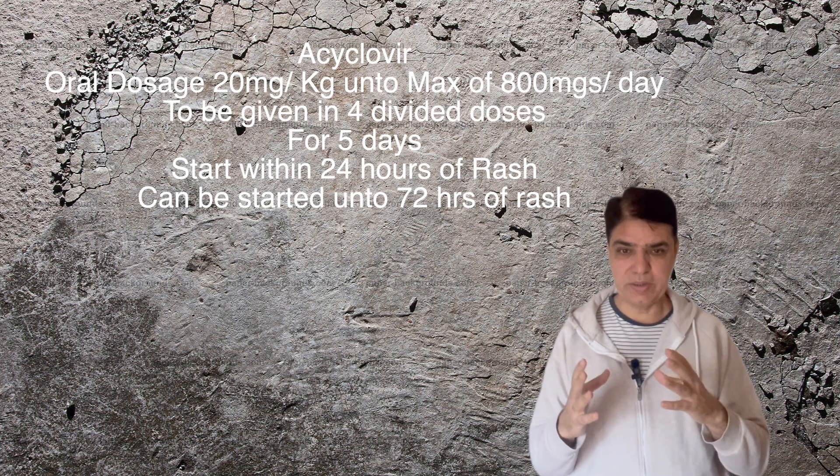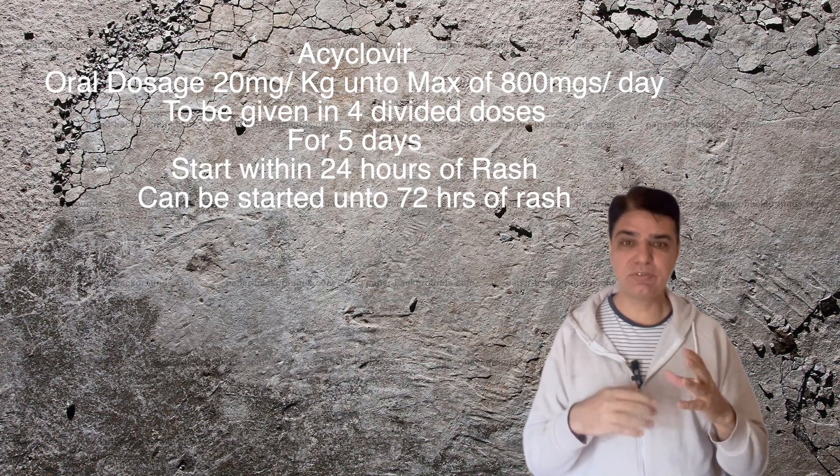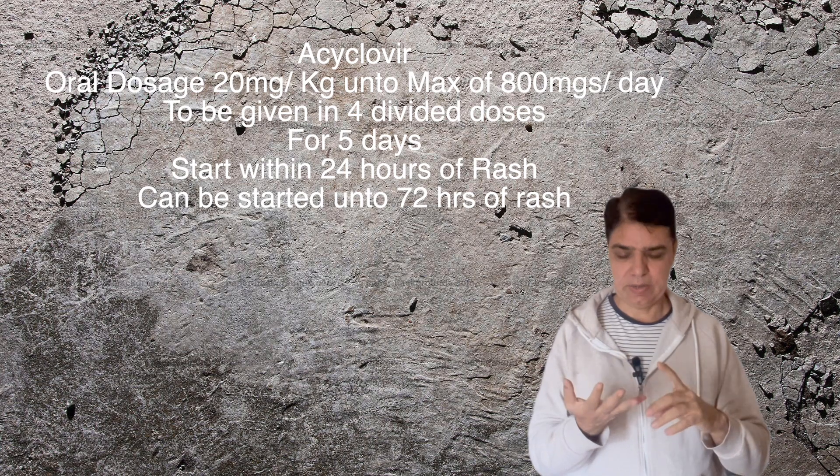This oral regimen is for uncomplicated varicella in children who may be at risk of developing complications. These are typically non-pregnant individuals older than 12 years of age — for example, a 15 or 16-year-old adolescent girl — or children above 12 months of age with an underlying chronic cutaneous disorder such as severe eczema, where varicella rash could be particularly severe.